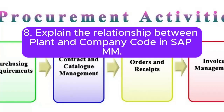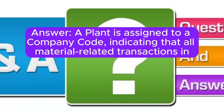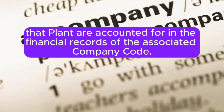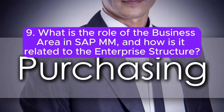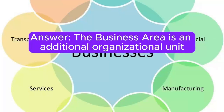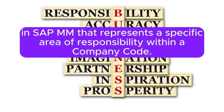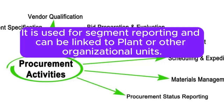Question 8: Explain the relationship between plant and company code in SAP MM. A plant is assigned to a company code, indicating that all material-related transactions in that plant are accounted for in the financial records of the associated company code. This linkage ensures proper financial integration. Question 9: What is the role of the business area in SAP MM, and how is it related to the Enterprise Structure? The business area is an additional organizational unit that represents a specific area of responsibility within a company code. It is used for segment reporting and can be linked to a plant or other organizational units.